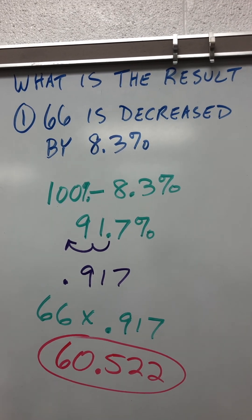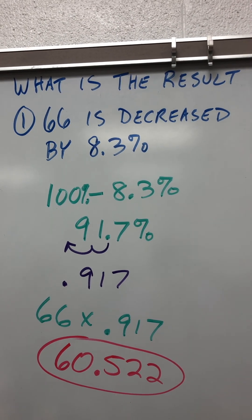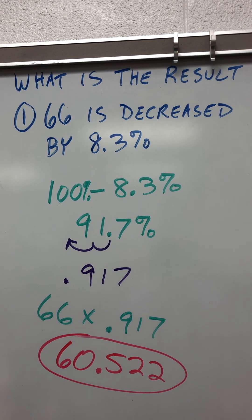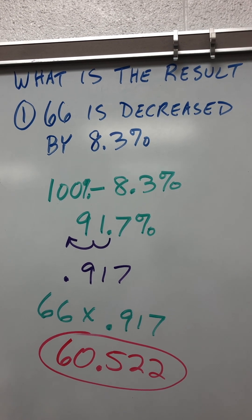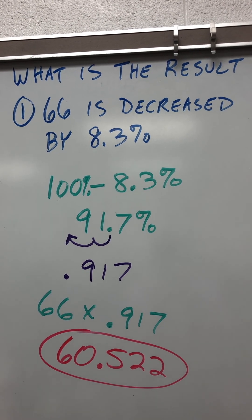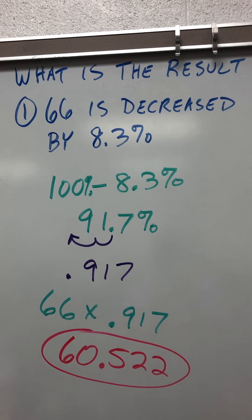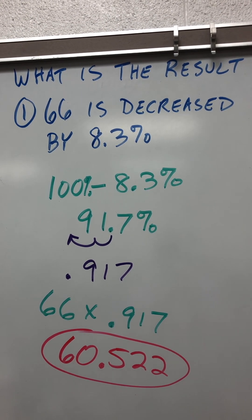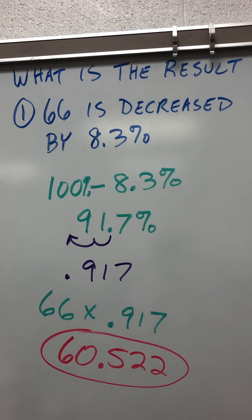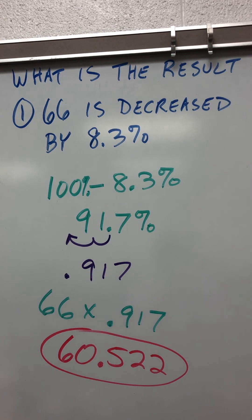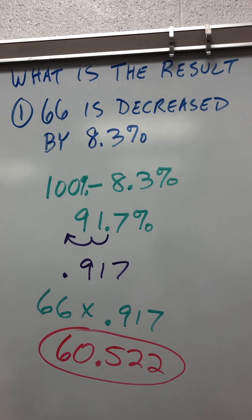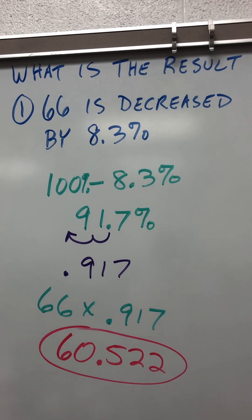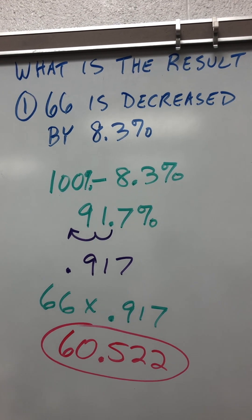If you're doing a Delta Math assignment today, you don't round. You just do 60.522 as it is to get the correct answer.